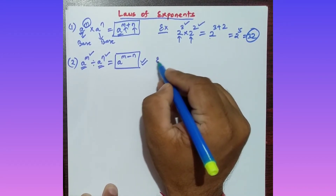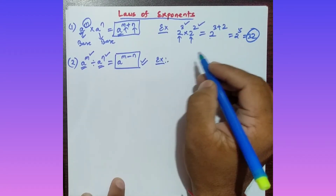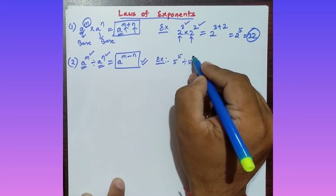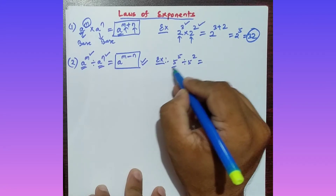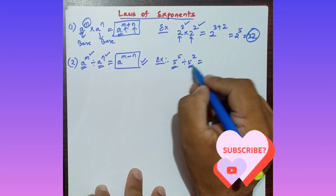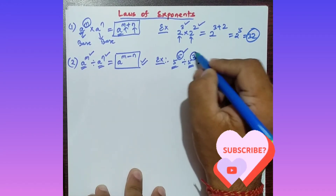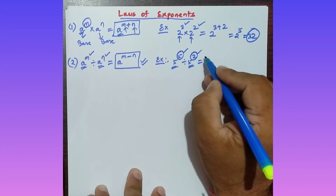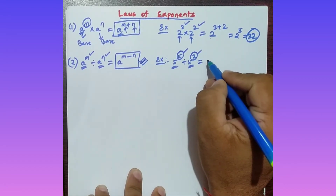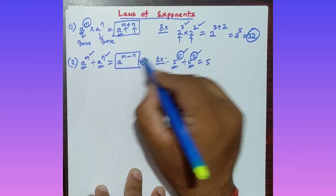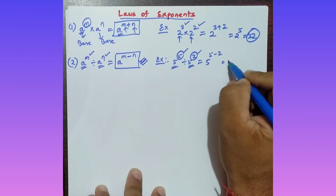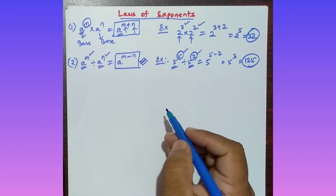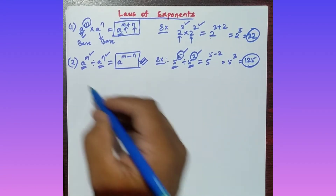Example for the second property: 5 to the power 5 divided by 5 to the power 2. The bases are both 5 (same), and the powers are 5 and 2 (different). Apply the formula: 5 to the power 5 minus 2, which is 5 to the power 3, and 5 cubed equals 125. That is your answer.